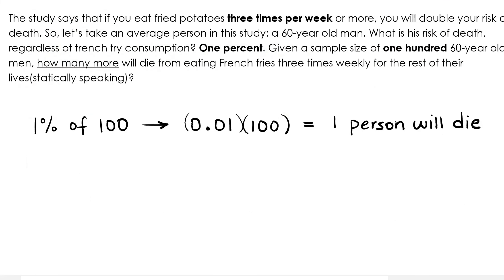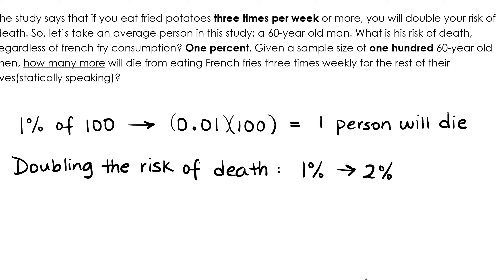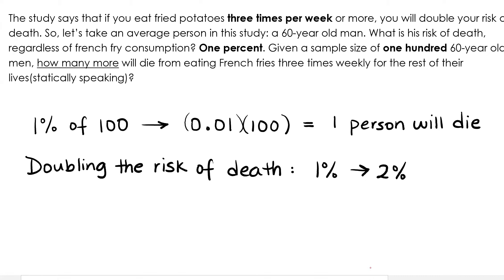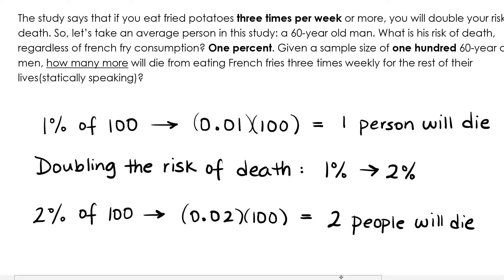So 1% of 100 is equivalent to multiplying 100 by 0.01 and we're going to learn why that's true in today's lesson. This means that one person will die, assuming they're not eating that much french fries. What does doubling the risk really mean? Well, it means that 1% becomes 2%. So 2% of 100 is equivalent to 0.02 times 100, meaning that two people will die.